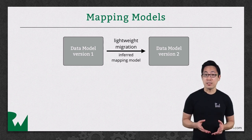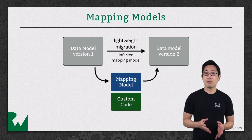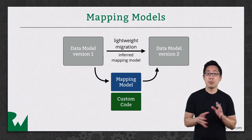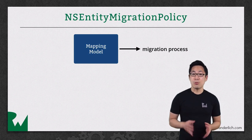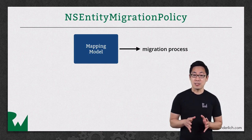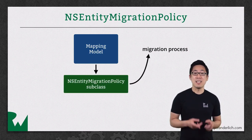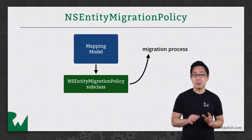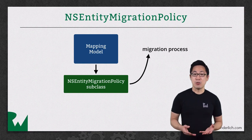Instead of having Core Data infer it, you can manually create a mapping model, which contains the instructions to go from one version of the data model to another. At its simplest, mapping models can move data between fields and even across relationships. If you have custom logic or code to insert in the migration process, you can subclass NSEntityMigrationPolicy and point to your subclass in the mapping model. Core Data will call methods on the subclass during each stage, and you can override these to add your own custom code.